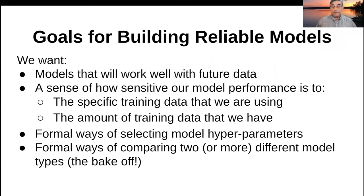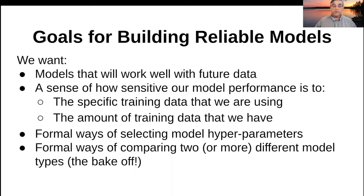We want to achieve a variety of different things as we go through this reliability type of process. First, we want to convince ourselves and other people that any of the models we are putting forward are actually going to work with data that we haven't seen before, and in particular with data that we're going to see in the future. We also want a good sense of how the model performs as a function of the specific training data and the size of that training data set. We also want to be able to select our model hyperparameters in a formal way, and when we have multiple model types, we want a formal way of comparing them in a bake-off scenario so that we can ultimately choose one to put into operation.